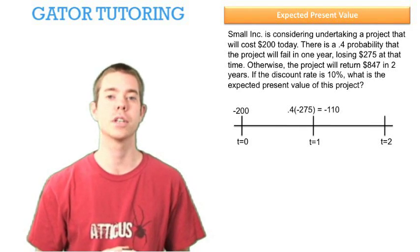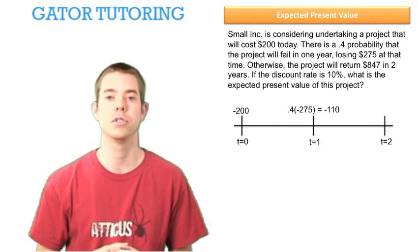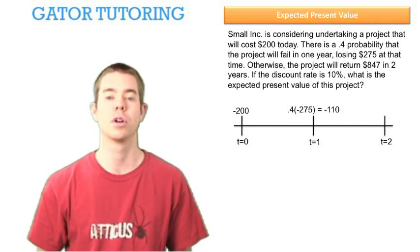In time period one, we have a 40% chance of receiving negative $275, so our expected value is negative $110.